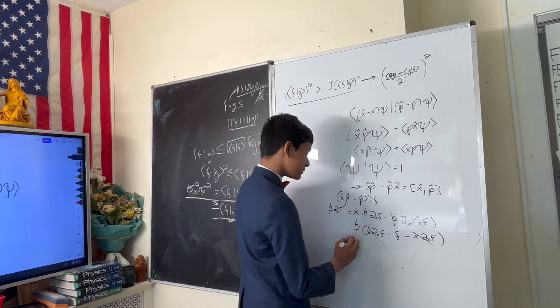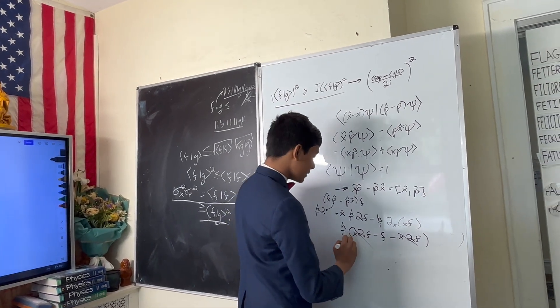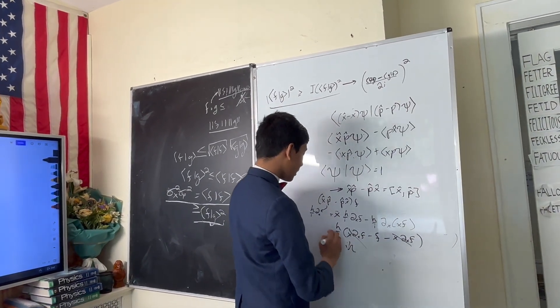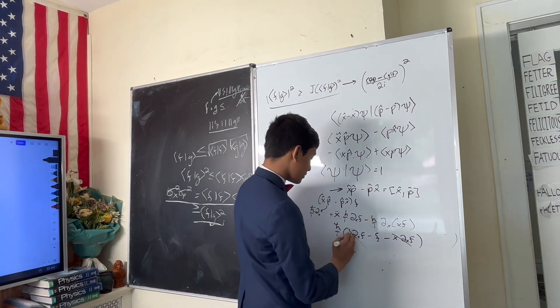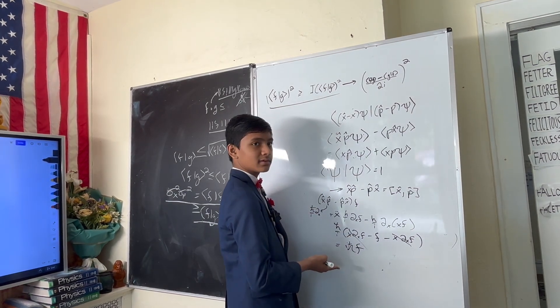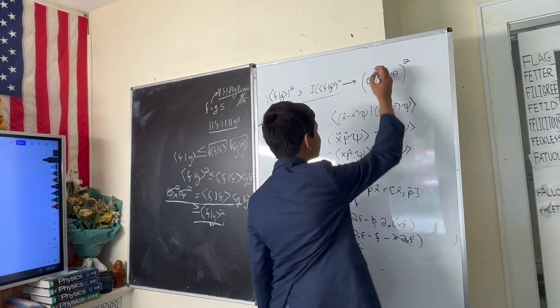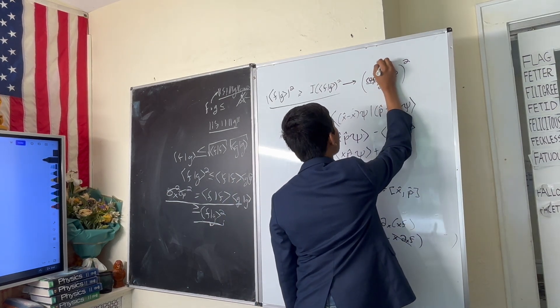And you get that this is i h-bar f, which means that this guy on top is just i h-bar. Remember, we were multiplying it by a test function, that's why the extra f is there.